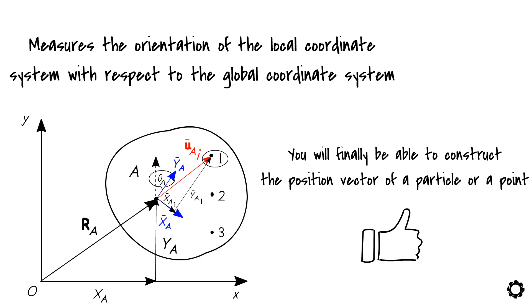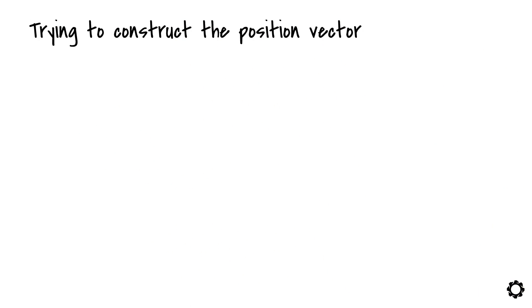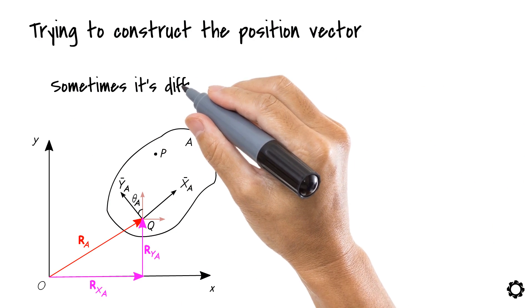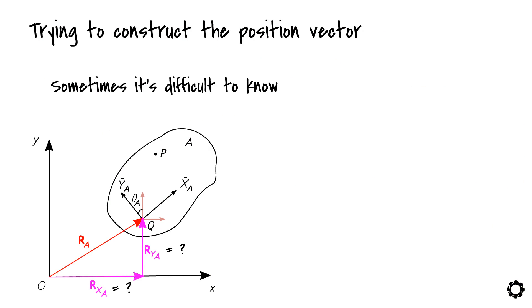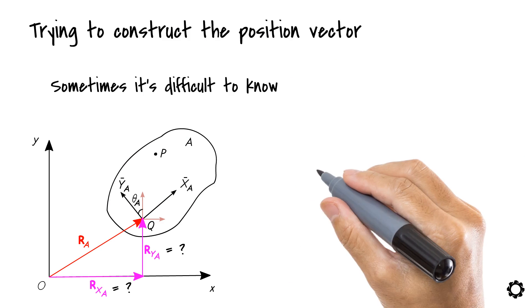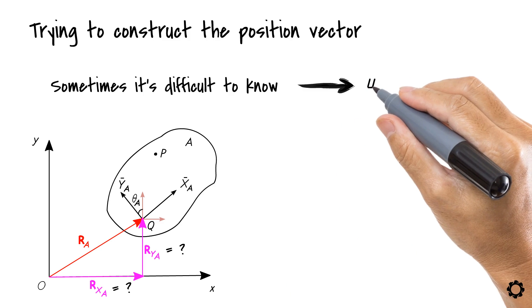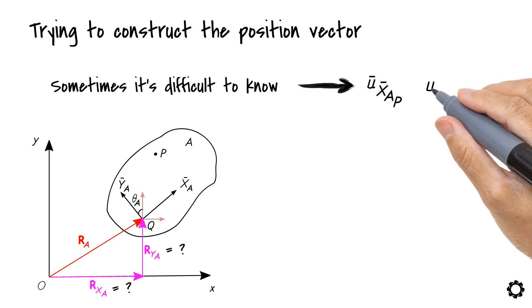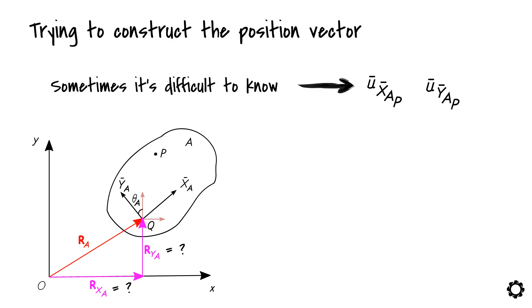One of the challenges of trying to construct the position vector only using the components of the global coordinate system was that sometimes it's difficult to know the value of these components. In this case, it might also be difficult to know the value of u̅_x̅_ap and u̅_ȳ_ap components in the global system.